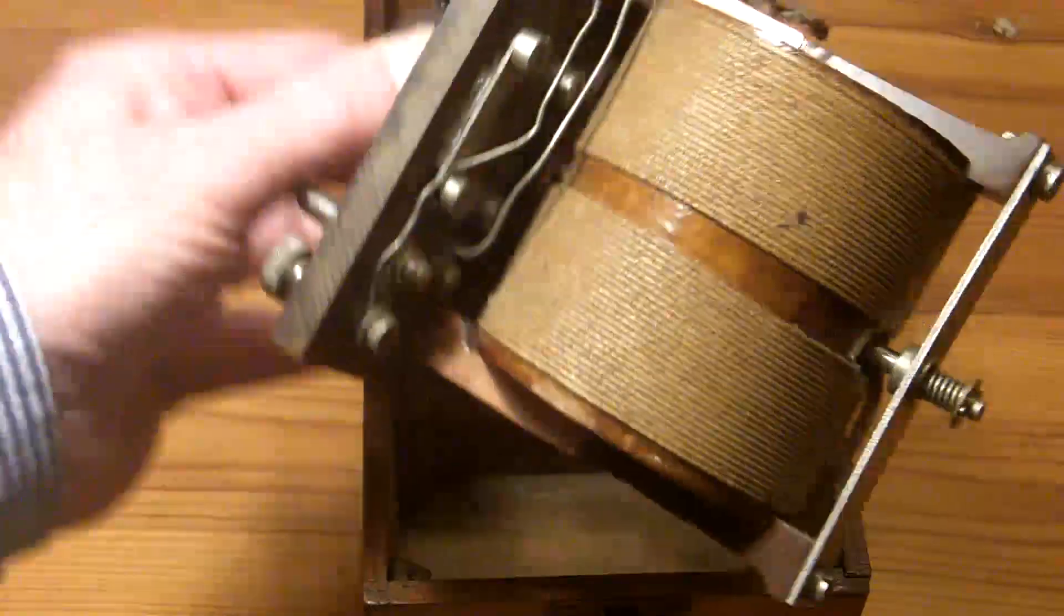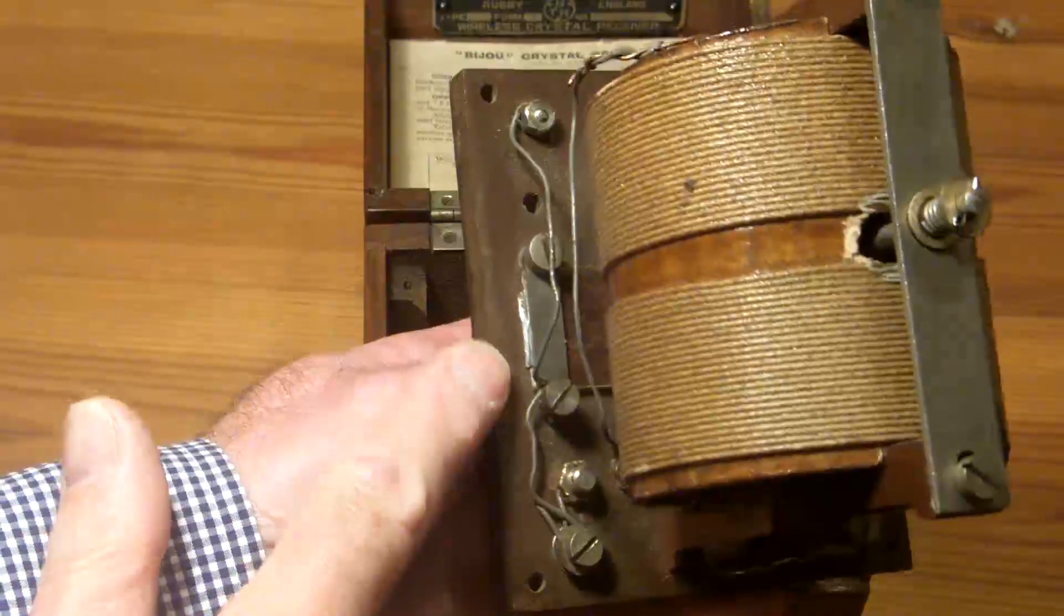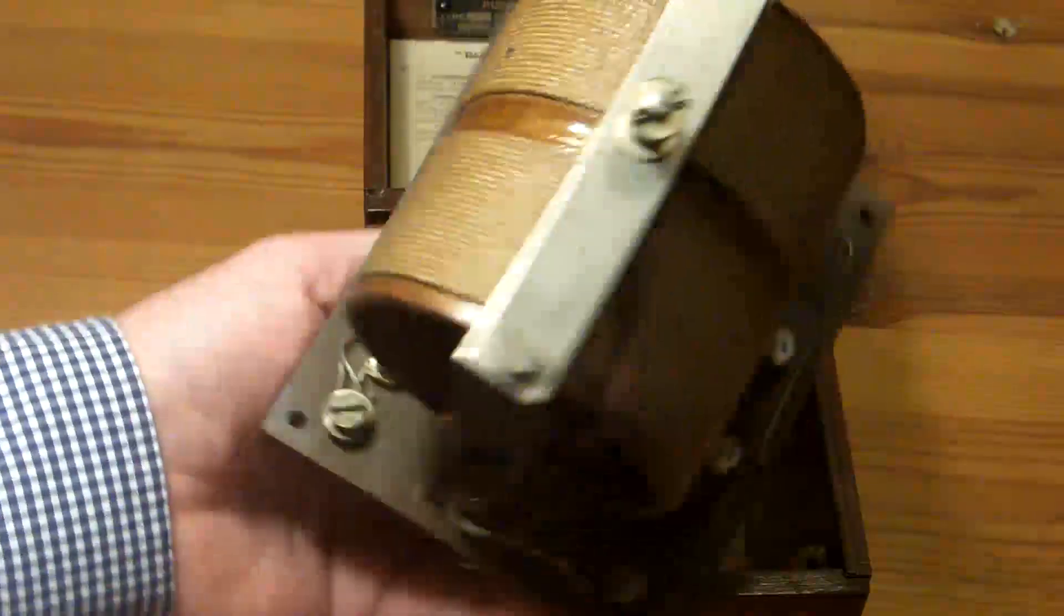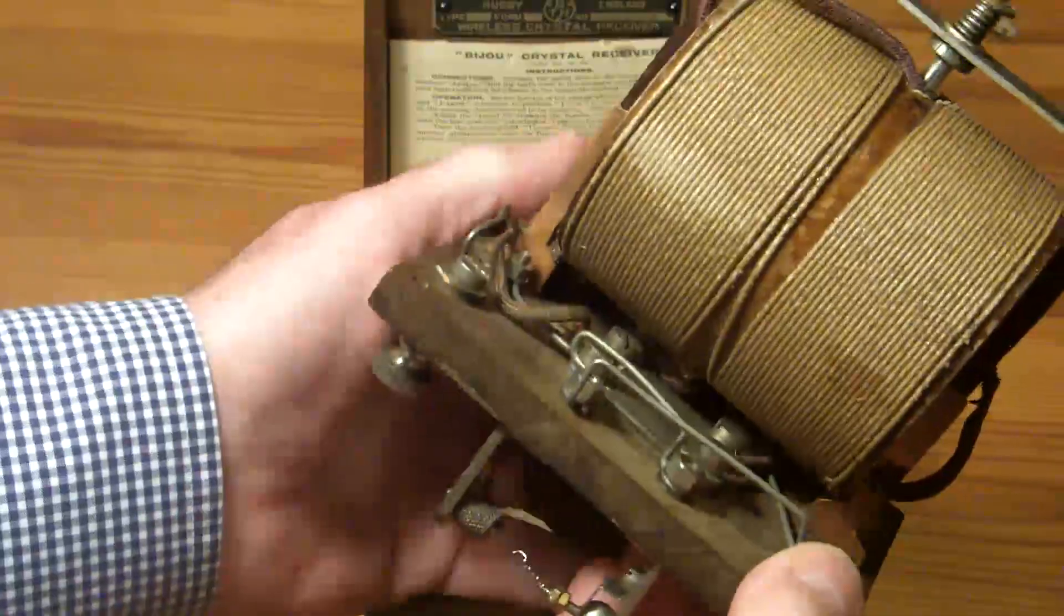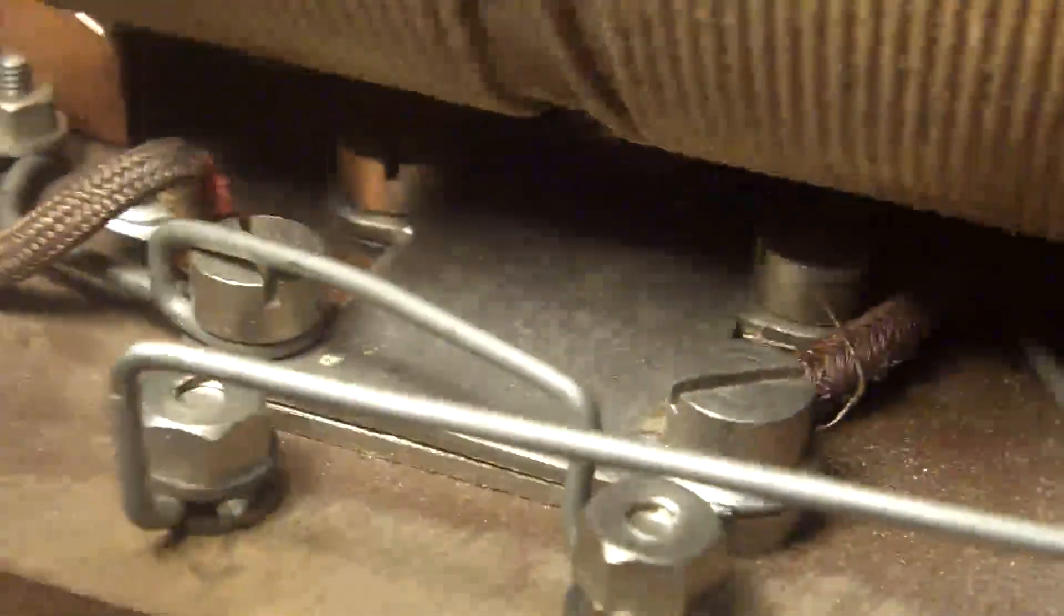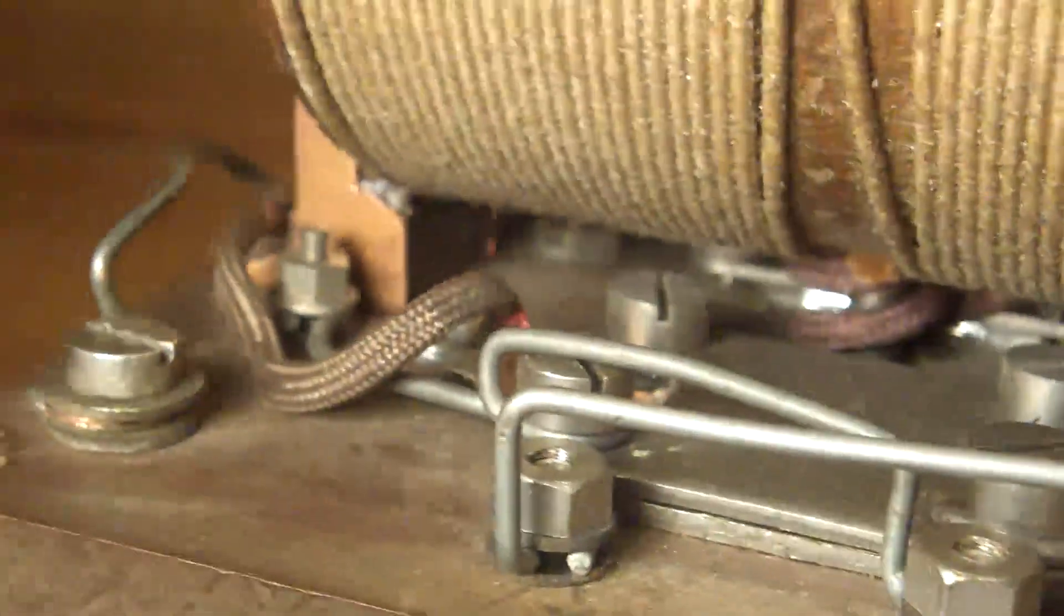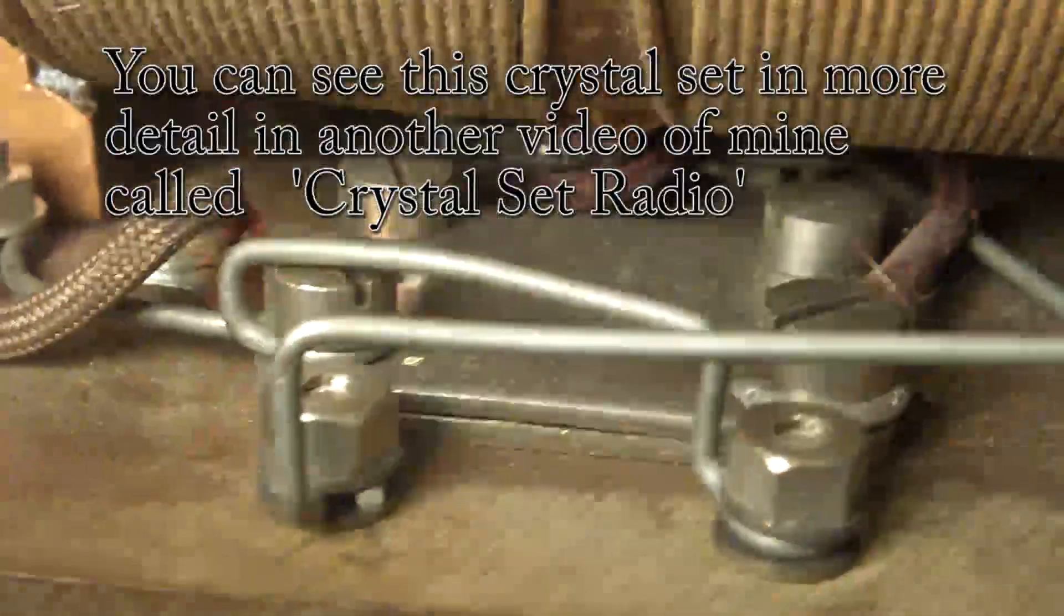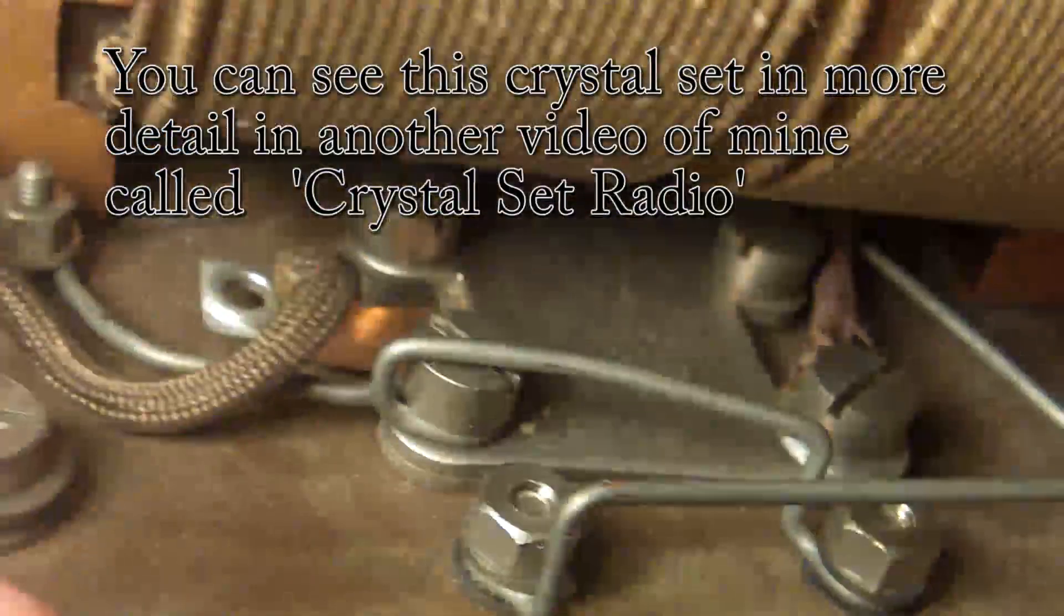It has two mica capacitors. Inside there's one and there's the other. These are both fixed capacitors. The tuning in this crystal set is carried out by altering the coils. These are very basic capacitors, but they work as well today as they did when they were made nearly 90 years ago, and in another 90 years they'll still be fine.